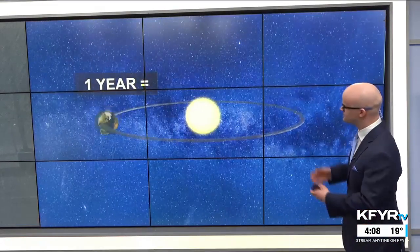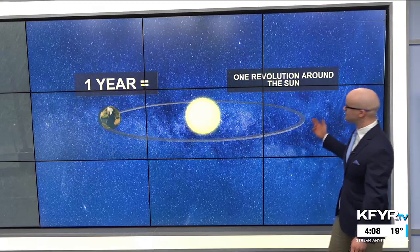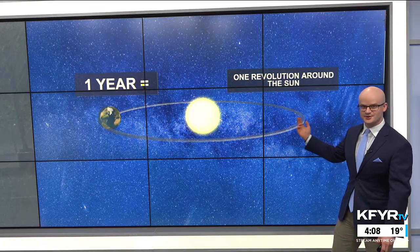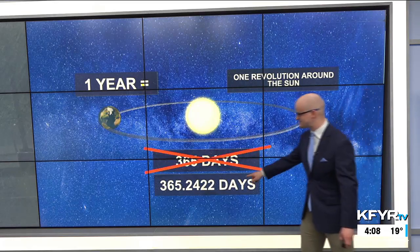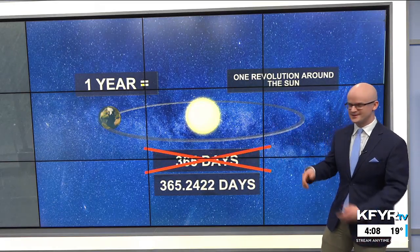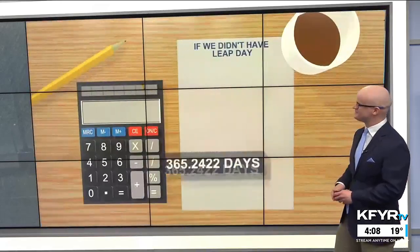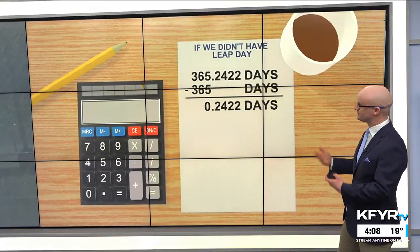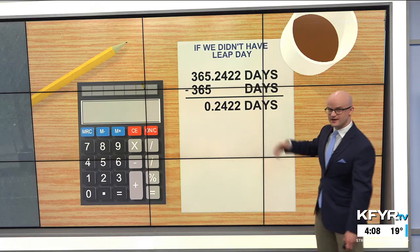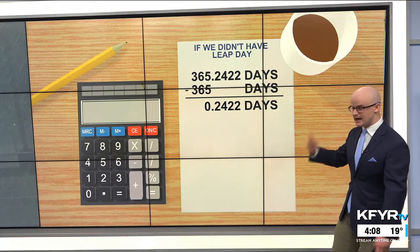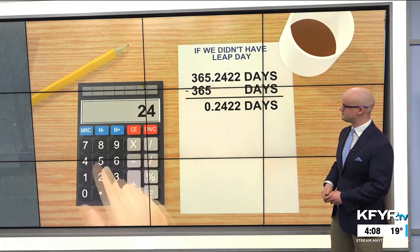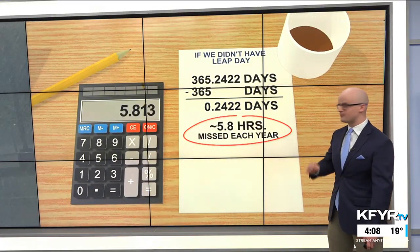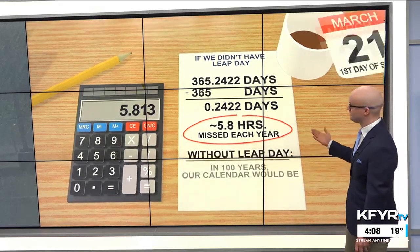It does have a little bit to do with science and specifically astronomy. A year is defined as one revolution around the sun — the time it takes for our Earth to make that orbit. And is it 365 days? Not exactly. It's 365.2422. So if we didn't have leap days, you subtract that from the 365 days that a normal, non-leap year is, and you have that difference — 0.2422 days — that's about 5.8 hours missed each year if we weren't going to have a leap day.